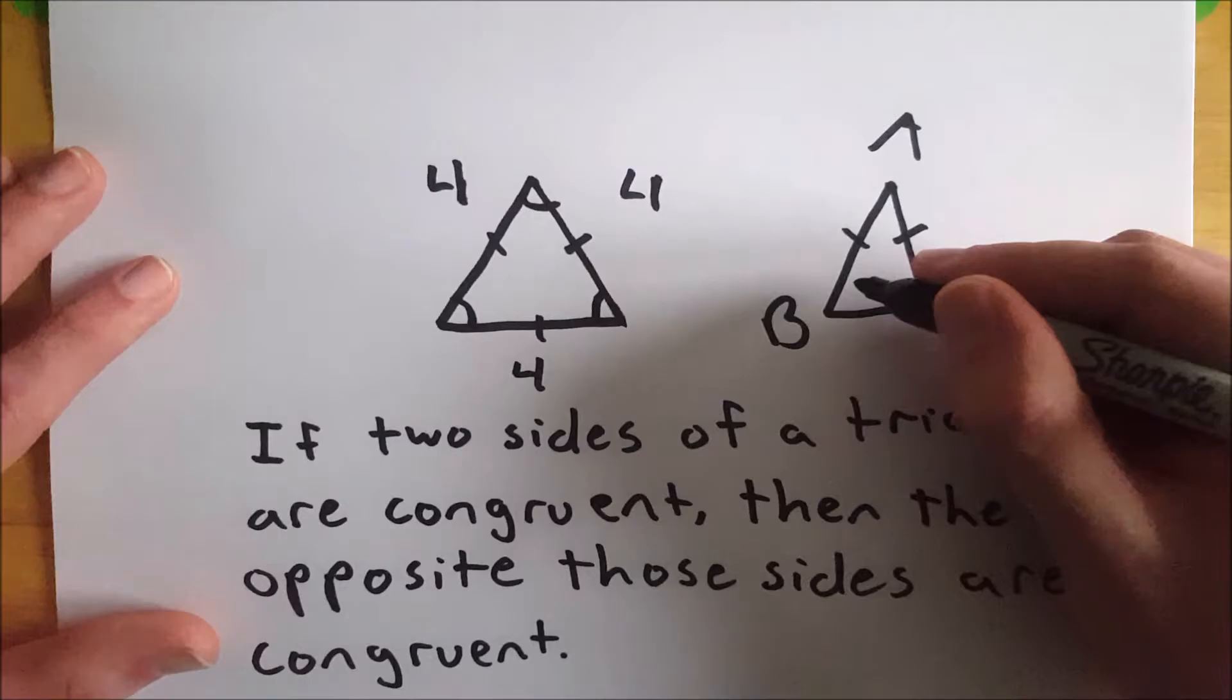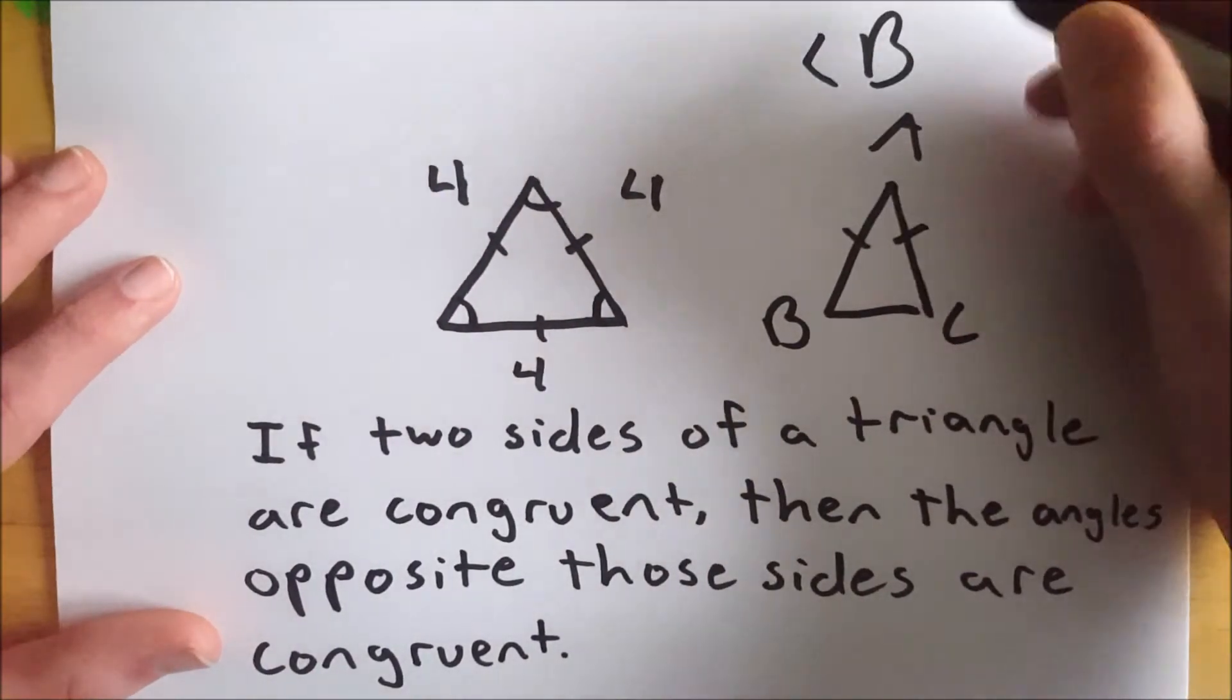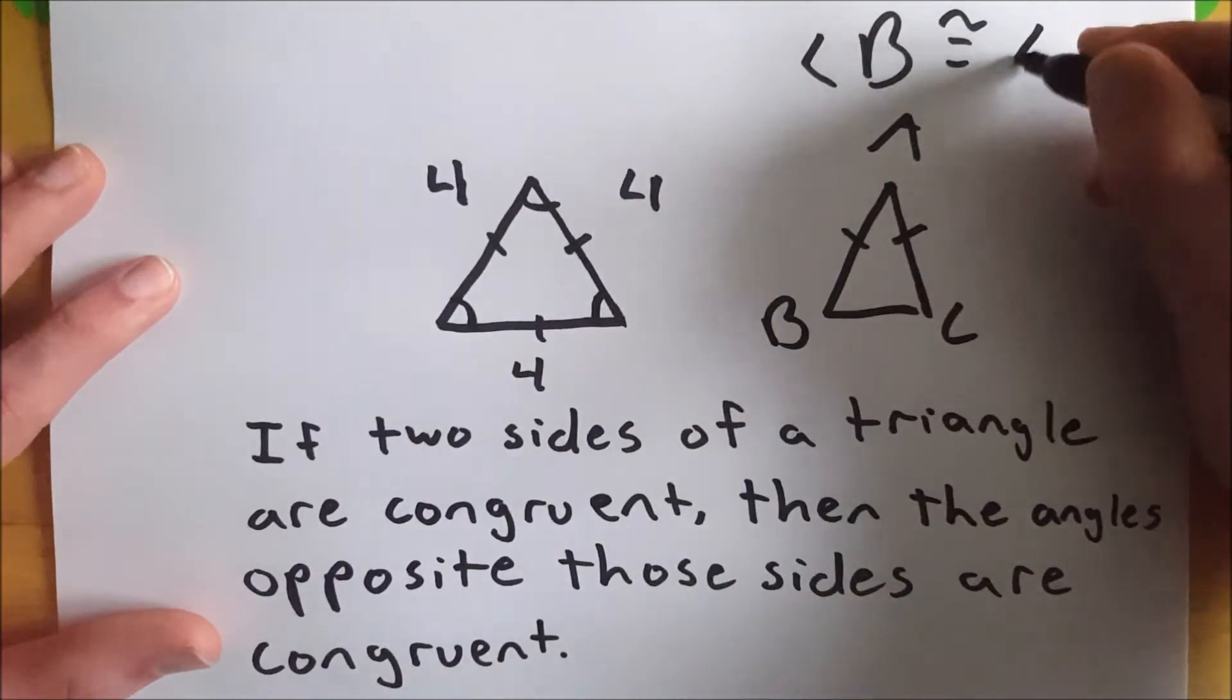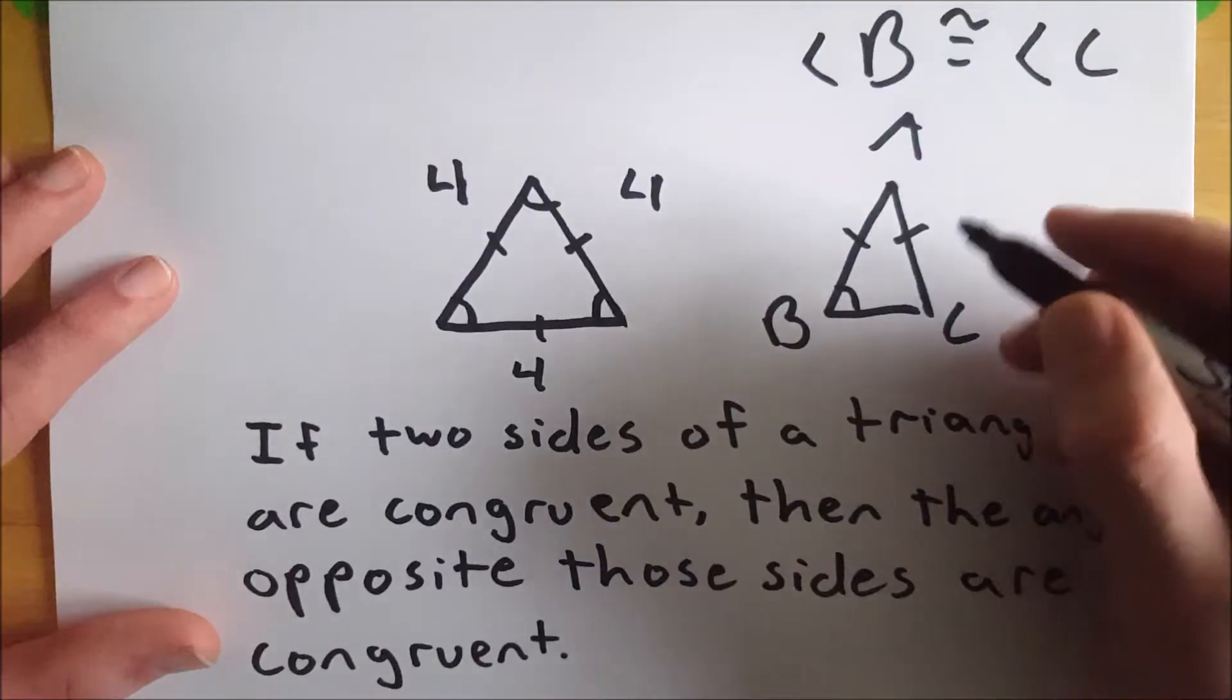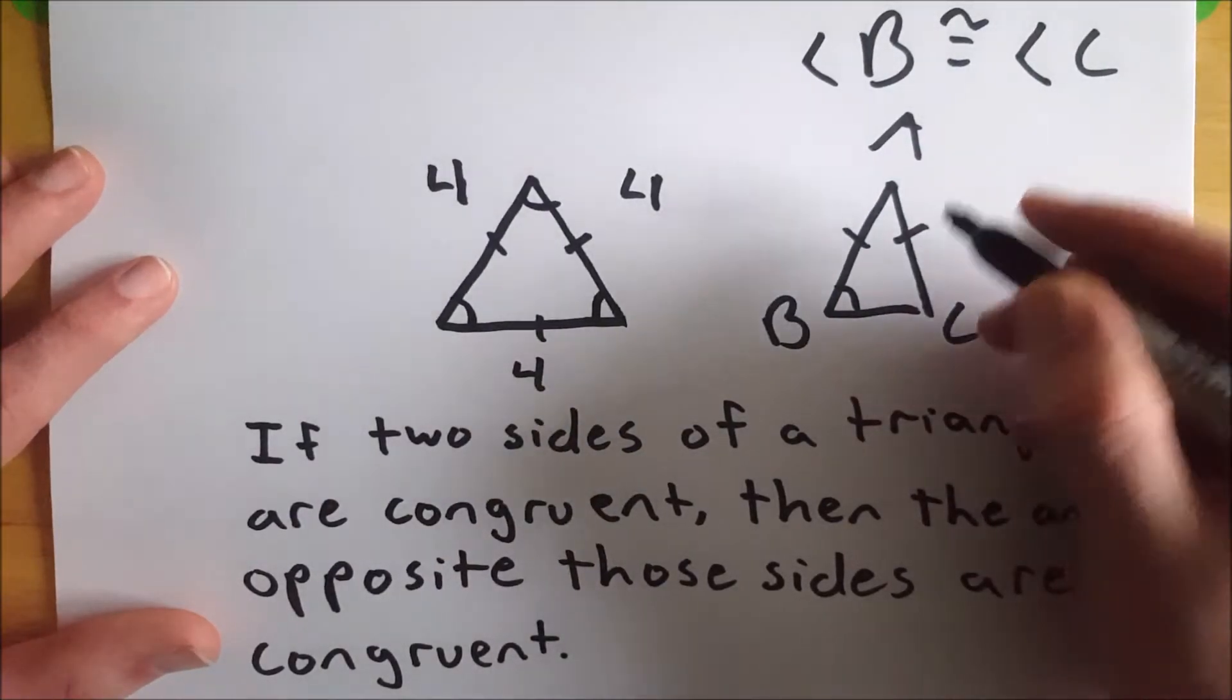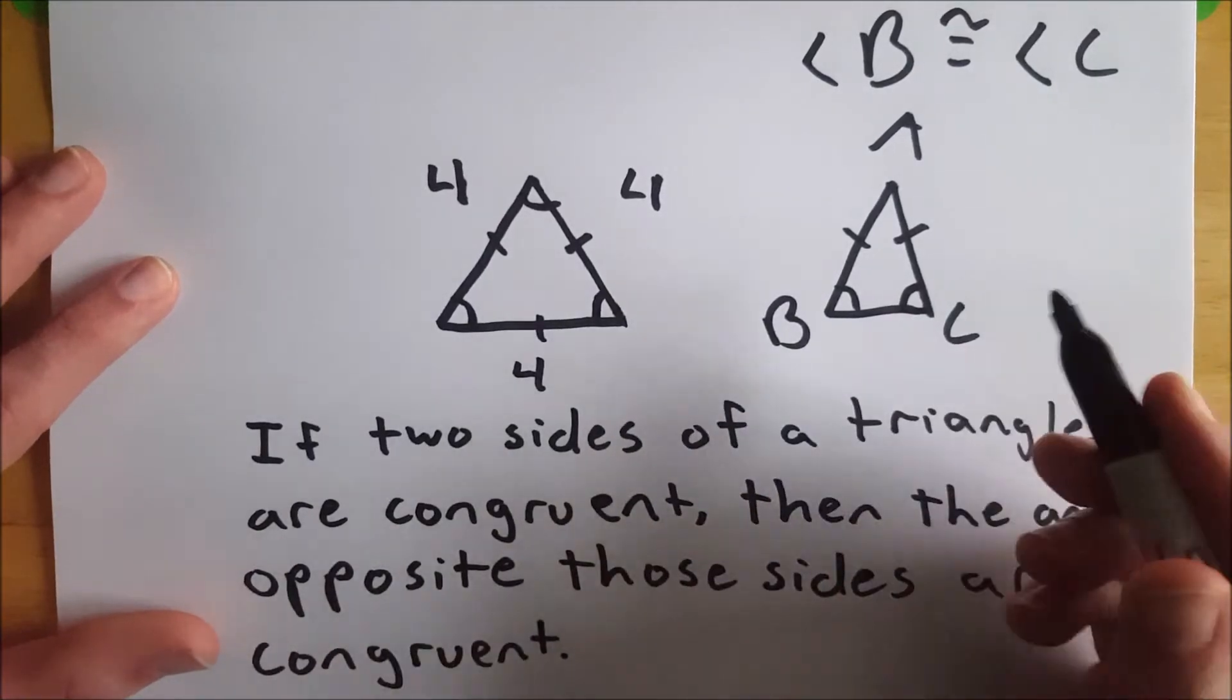By the isosceles triangle theorem, angle B, use the vertex, is congruent to angle C. Angle B is opposite this side, and angle C is opposite this side. So by the isosceles triangle theorem, those two angles are congruent.